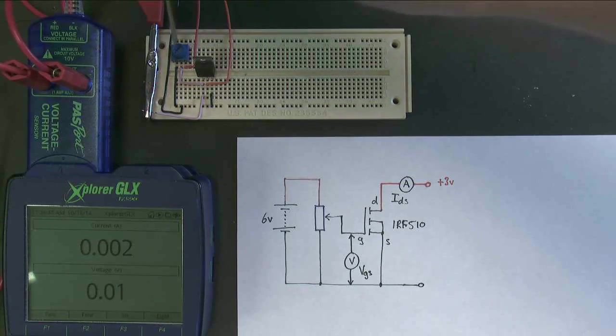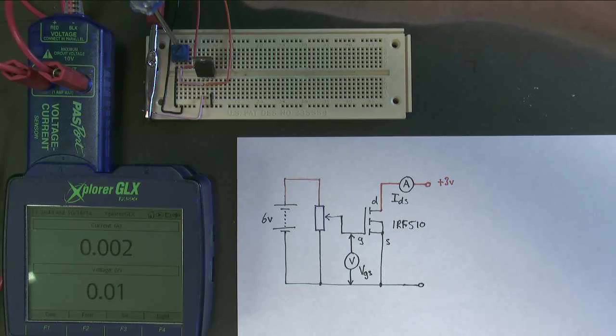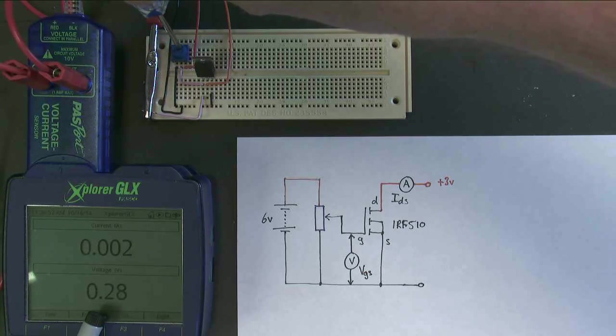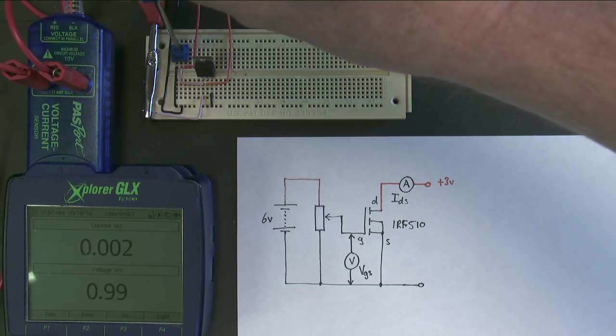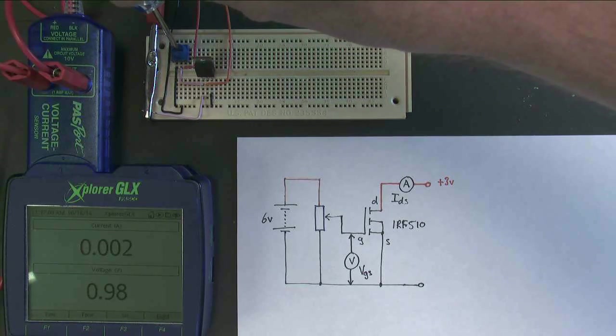I'm going to do a quick experiment to see what happens. So I'm going to increase the gate voltage. This is the gate source voltage increasing here. And as you can clearly see, nothing happens to the current. So the first thing we learn is that for a MOSFET, when the gate source voltage goes even up to one volt, it doesn't conduct. Let's see how high we have to go before it conducts.